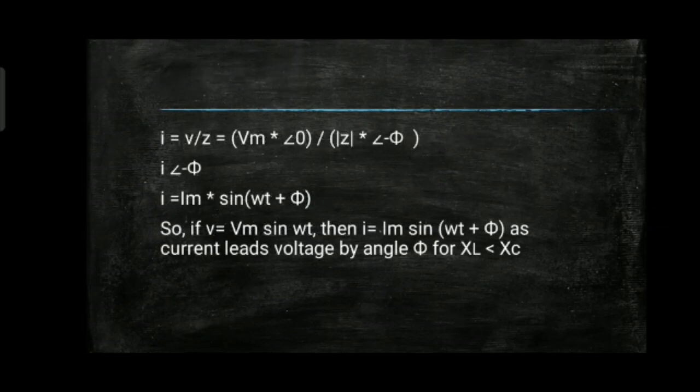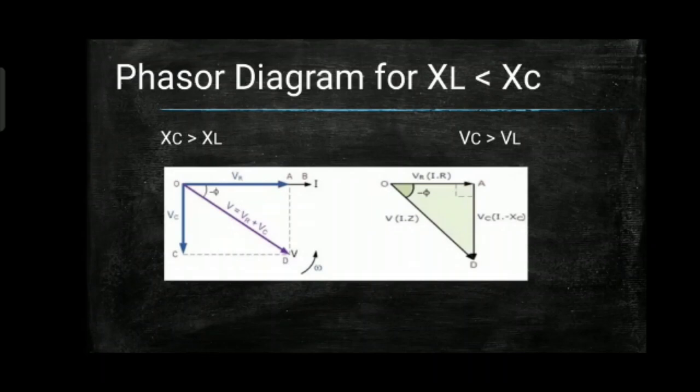The equation of current: I = V/Z = Vm∠0 / |Z|∠−φ, giving i = Im sin(ωt + φ). So if V = Vm sin(ωt), then I = Im sin(ωt + φ), meaning current leads voltage by angle φ when XL is less than XC, i.e. inductive reactance is less than capacitive reactance. Below is the phasor diagram for XL less than XC.